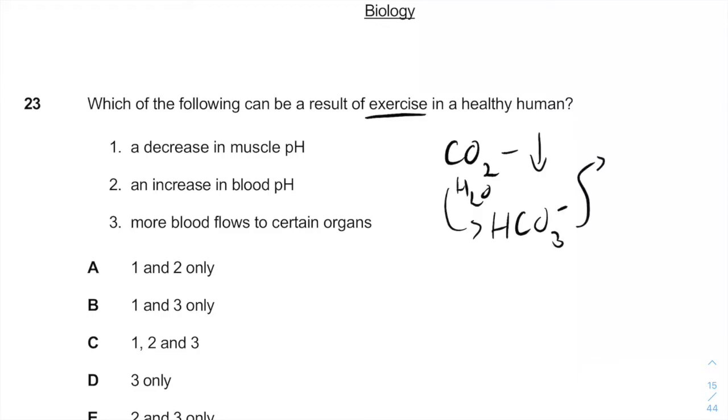Bicarbonate will decrease the pH of the surroundings and of the blood, and therefore one is correct. Also, because we are being asked on muscle pH and not blood pH, as you can see, two is not correct because we can expect a decrease in blood pH.